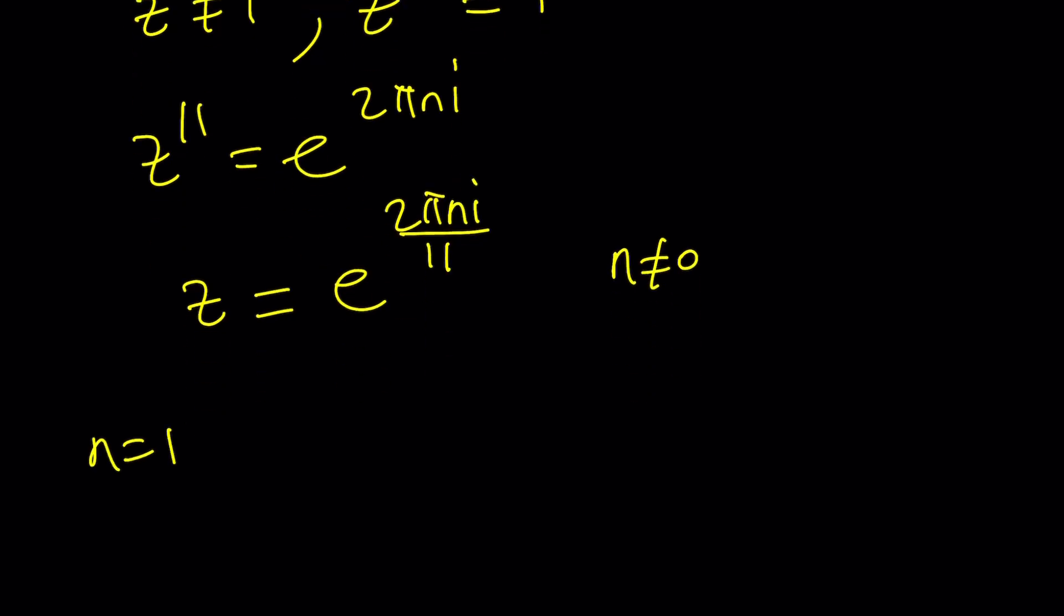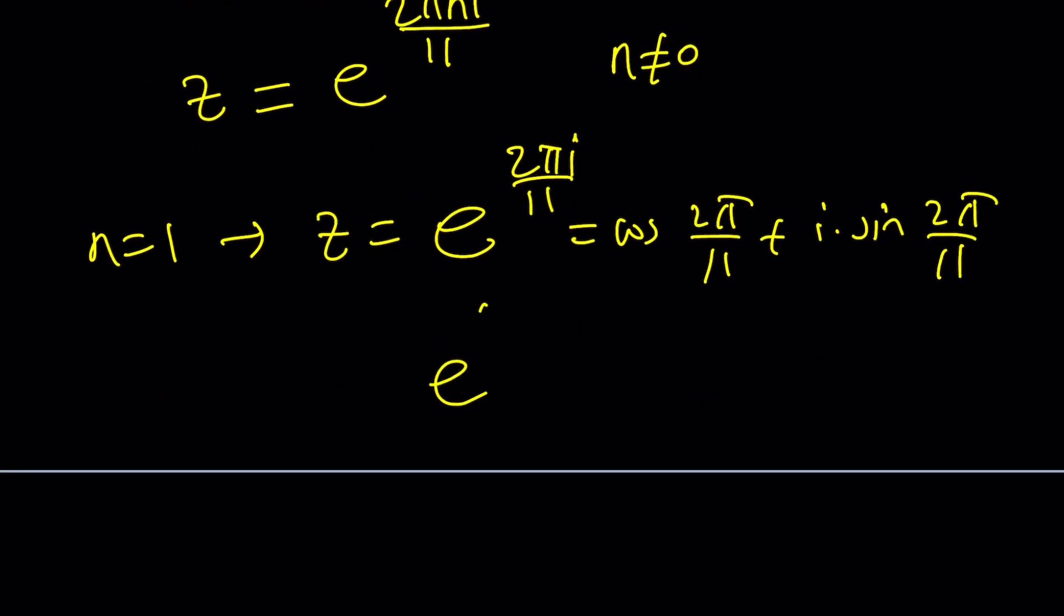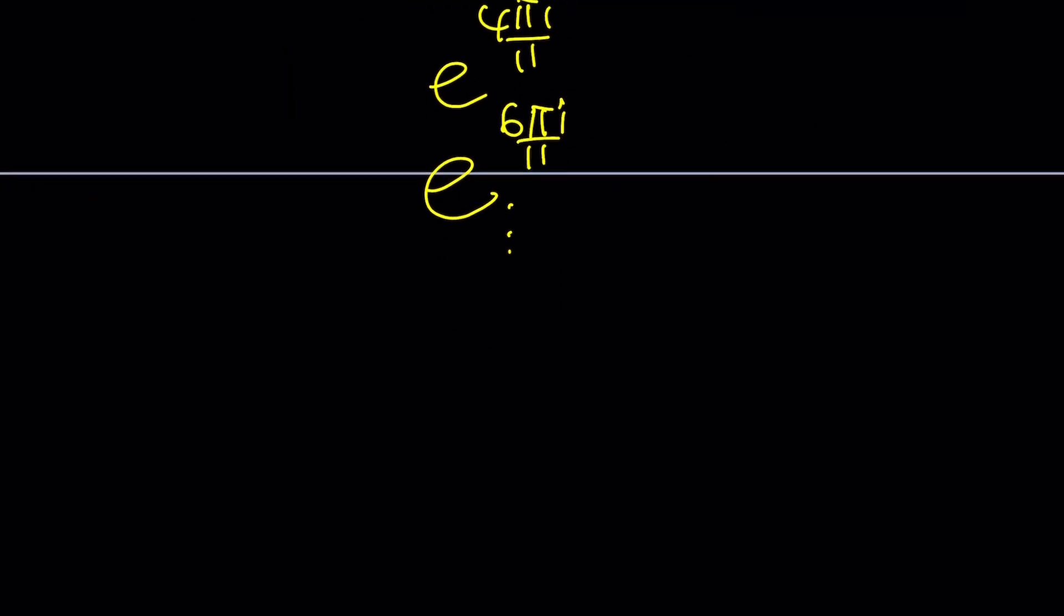If n is equal to one, for example, you're going to get z equals e to the power two pi i over 11. And this can be written as cosine of two pi over 11 plus i sine two pi over 11, by the way, but I'm not going to write all of these. The next one is going to be e to the power four pi i over 11. And we're going to get e to the power six pi over 11, all the way to e to the power 20 pi i over 11. When you hit 22, you're going to be back at two pi i.